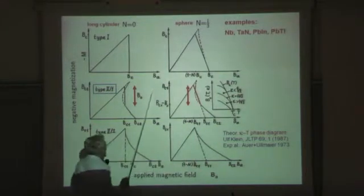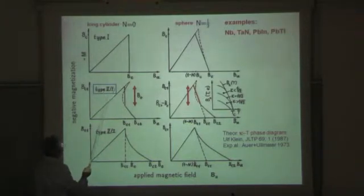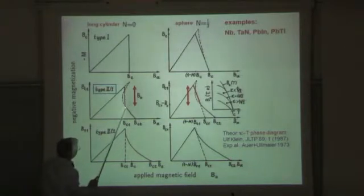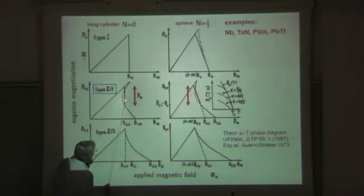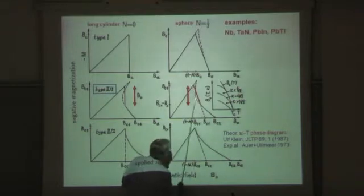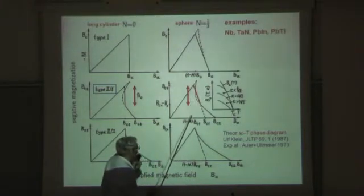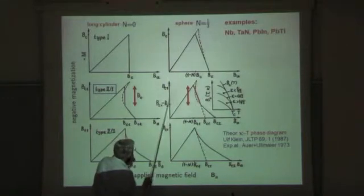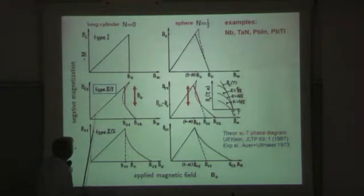This is now tilted, and when you do this for niobium, you find this type 2.1 behavior. Moschalkov calls it type 1.5 — just a different name. Then vortices will jump here when you increase the applied field from a small distance, from infinite distance to finite distance, but you cannot observe this state when you have a long cylinder. But when you have a sphere, this vertical curve is now tilted and you can apply a magnetic field anywhere in this range, and then you will see this cluster structure which I showed before. So you can choose any induction by choosing an appropriate applied field. This is the so-called type 2.1 behavior.